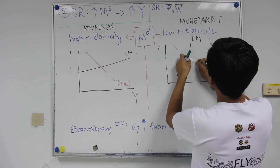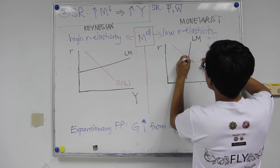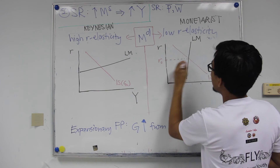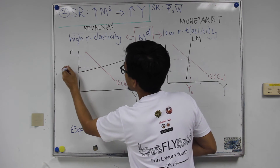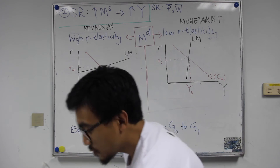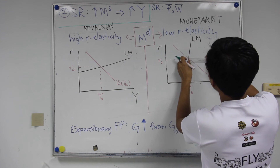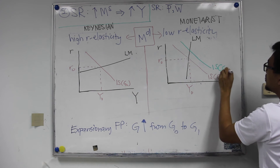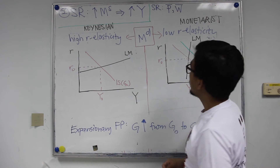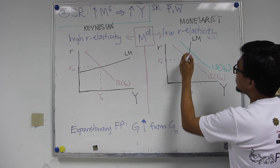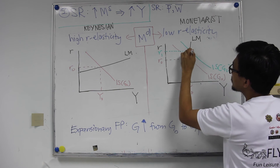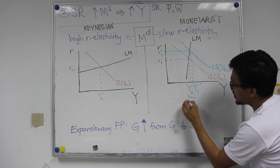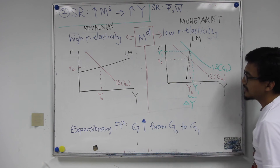Let's say the initial equilibrium is at R0 and Y0 for both cases, and a two-inch rightward shift gives us ISG1. In the monetarist case, because the LM curve is very steep, the new equilibrium results in a higher interest rate and a higher income, but the change in real income is relatively small.